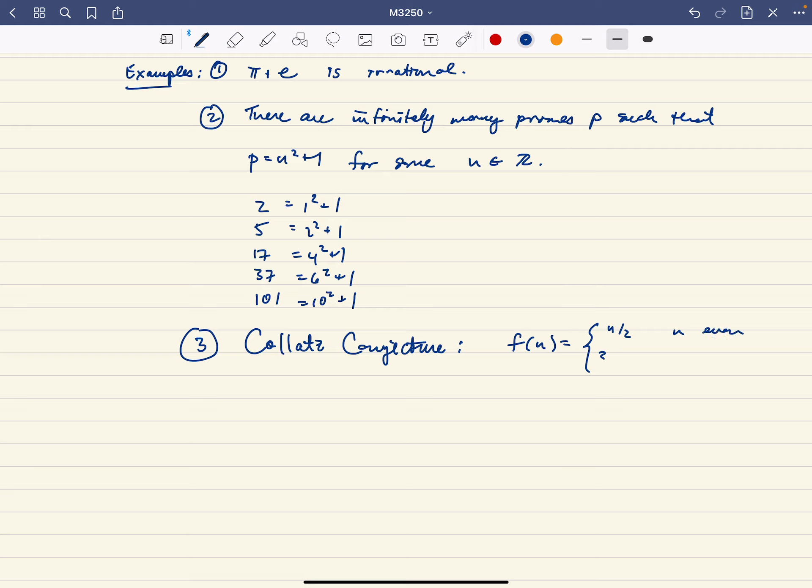f(n) is going to be n/2 if n is even, and f(n) is going to be 3n + 1 if n is odd.